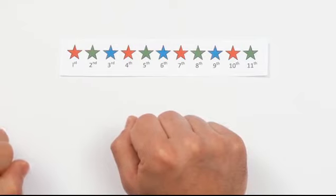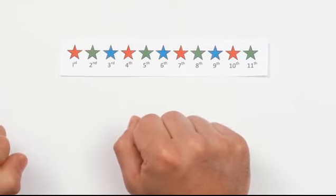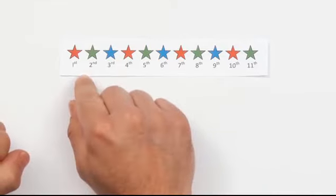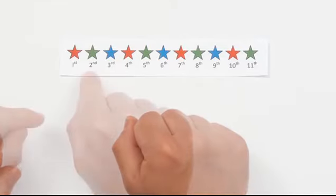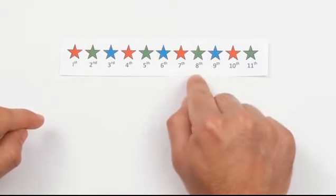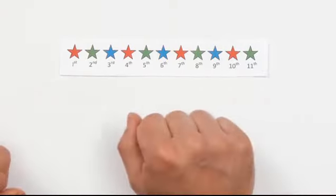If the positions of all the blue stars are multiples of 3, then the positions of all the green stars will be one less than multiples of 3. That's the 2nd star, the 5th star, the 8th star, the 11th star, and so on.